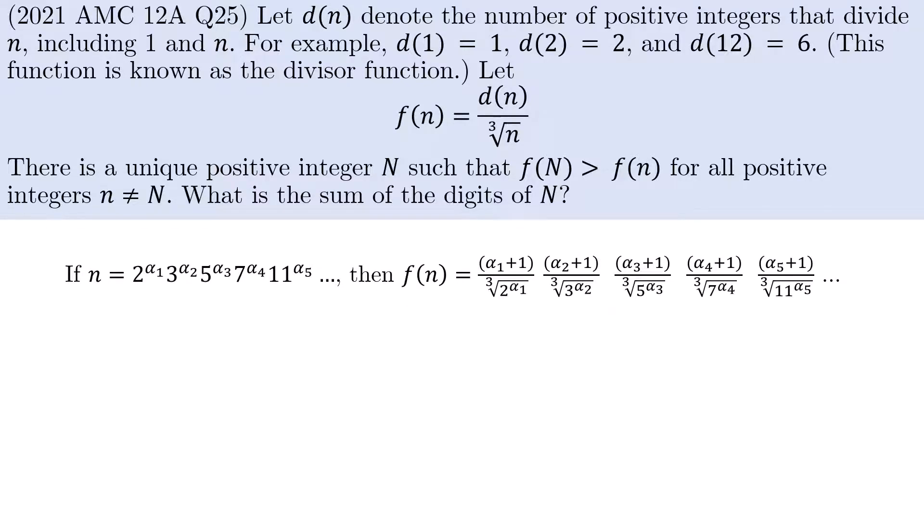2 to the power of some alpha 1, 3 to the power of some alpha 2, and so on, where the alpha could be 0 if the prime is not a prime factor of n. Now, we can write out f(n) as a successive product of fractions as shown. Notice that we can try to maximize each fraction individually by fiddling with each alpha at a time.